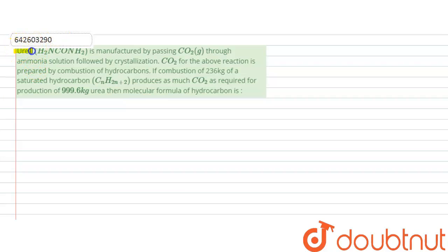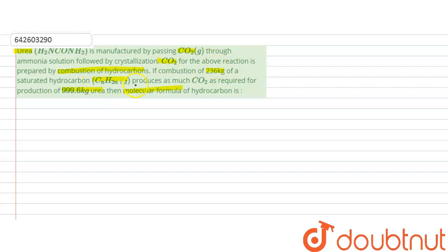The question is: urea (NH₂CONH₂) is manufactured by passing CO₂ through ammonia solution followed by crystallization. CO₂ for this reaction is prepared by the combustion of hydrocarbons. If combustion of 236 kg of a saturated hydrocarbon CₙH₂ₙ₊₂ produces as much carbon dioxide as required for the production of 999.6 kg of urea, then the molecular formula of the hydrocarbon is to be found.